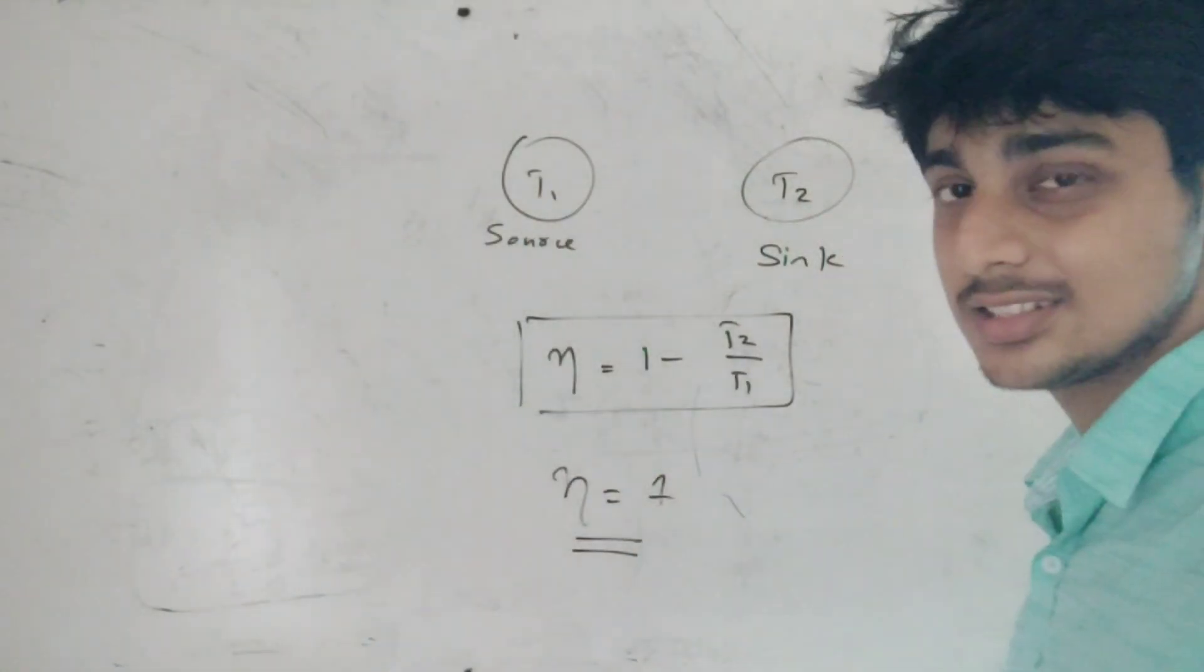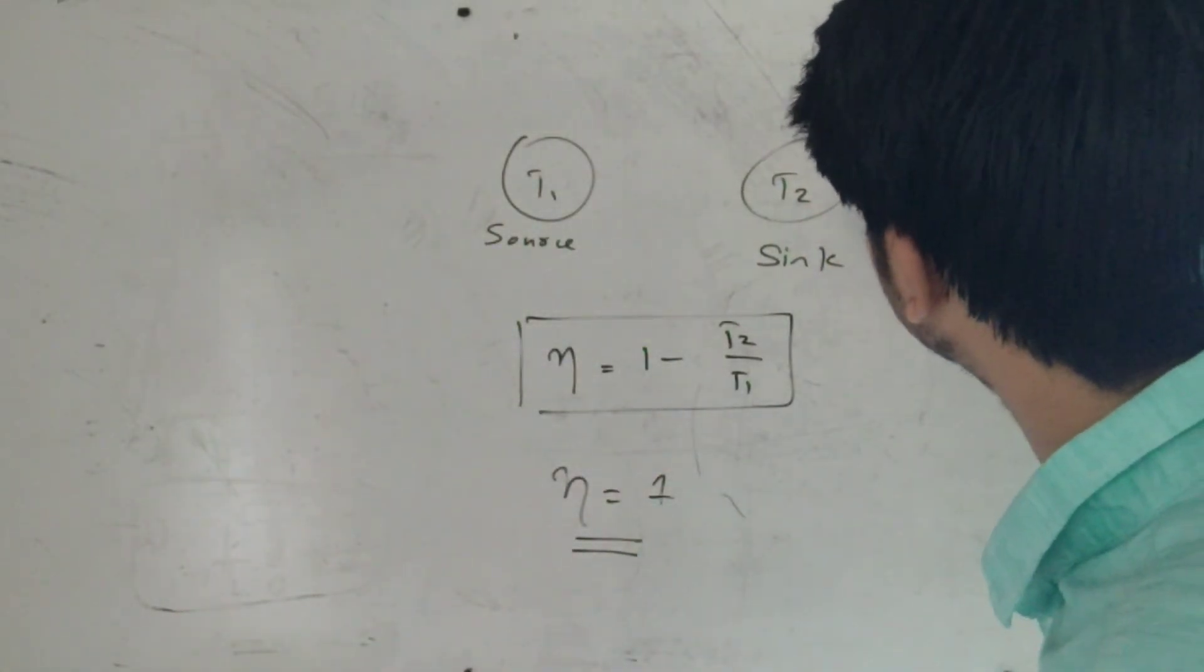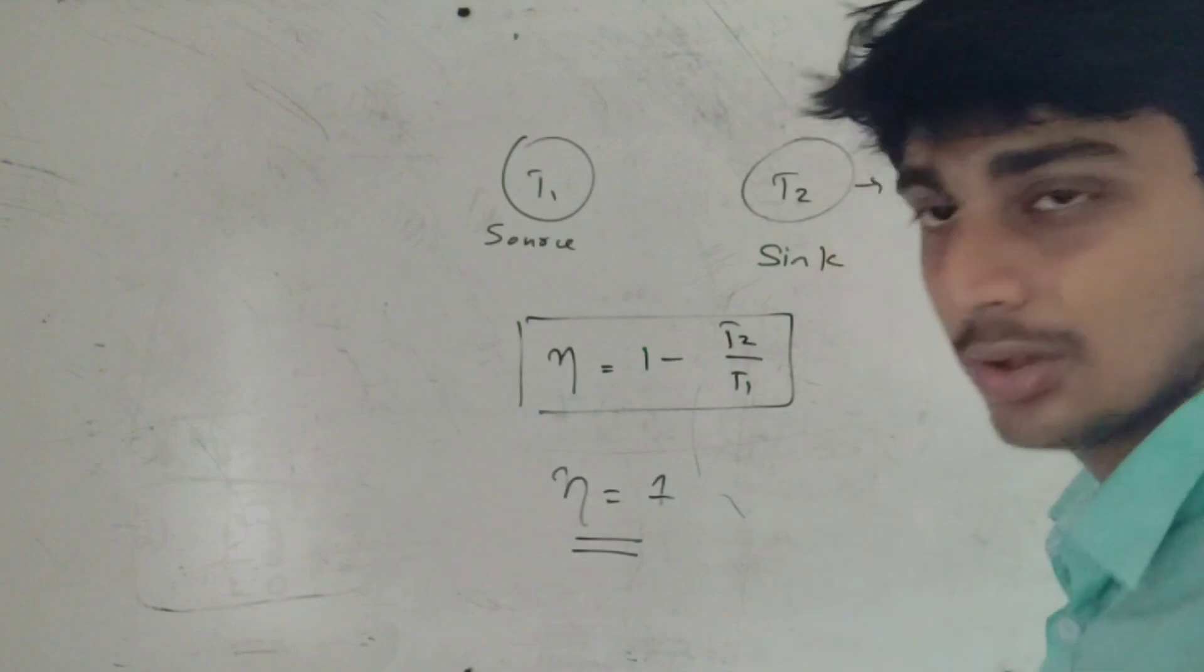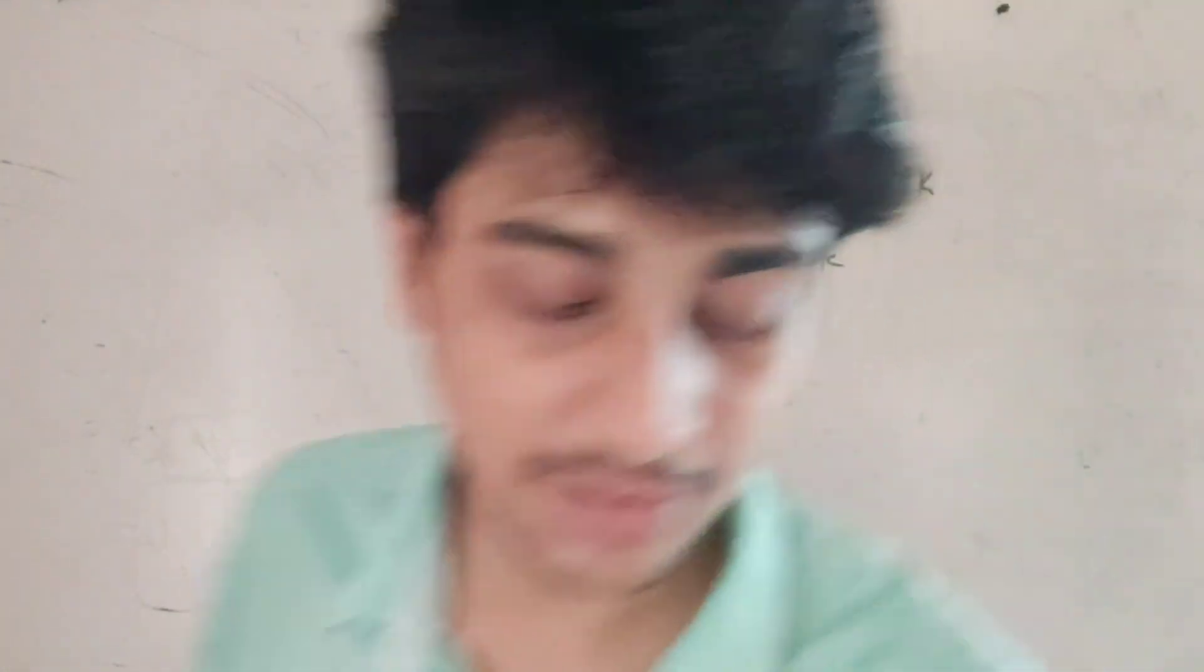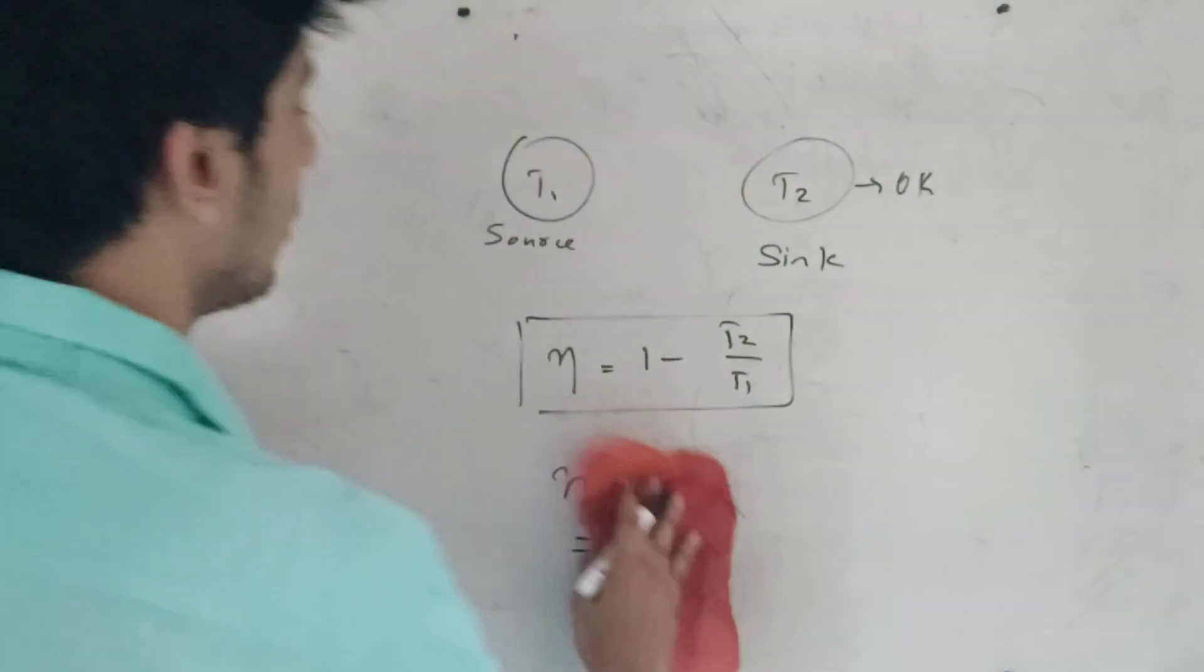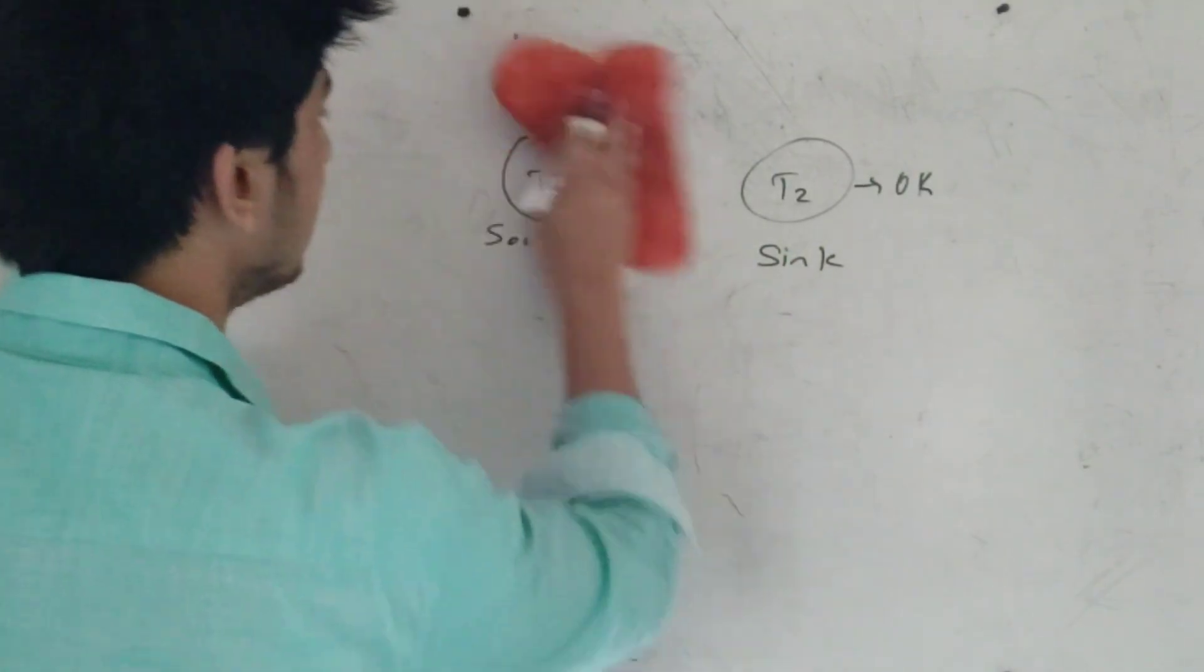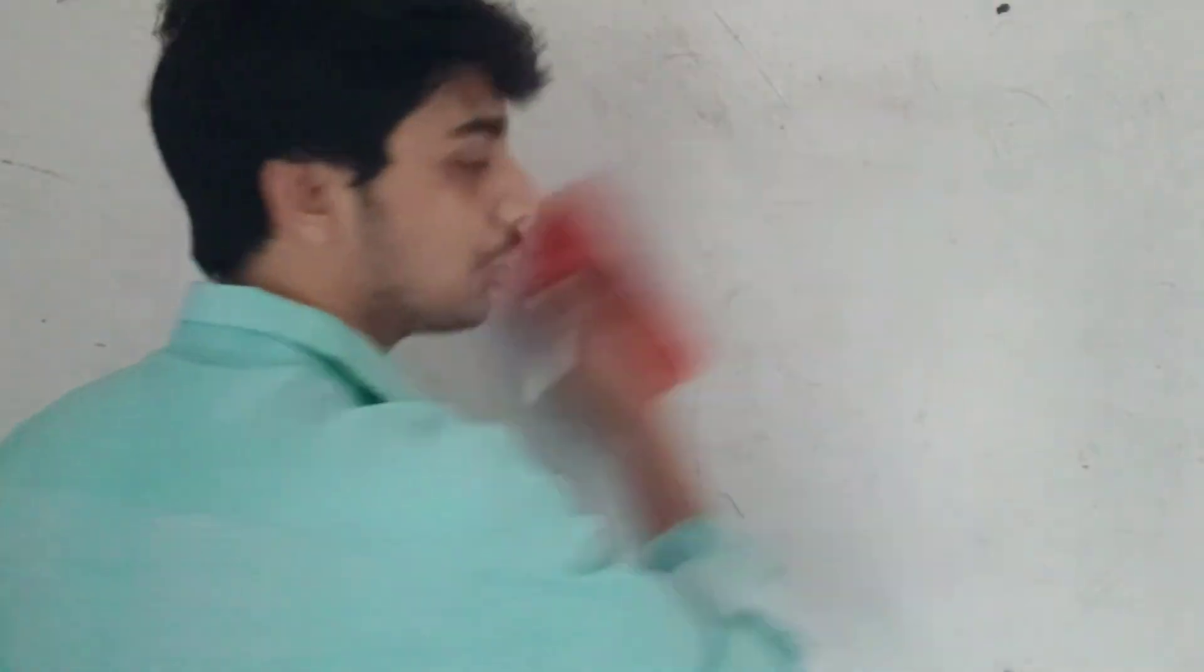When the sink temperature is 0 Kelvin, η equals 1.